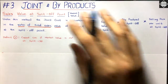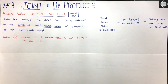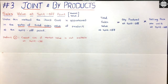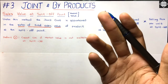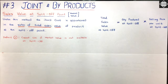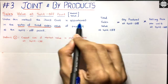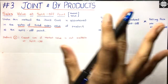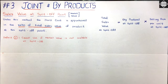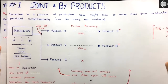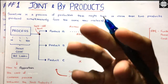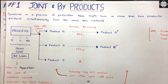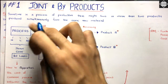Let's begin with the first variant: sales value at split off point method, also known as the sales value at separation point method. This method says that you have to apportion the joint cost in the ratio of total sales value of each product at the split off point. First, you have to find out what is the total market value of all the products separately at the split off point.